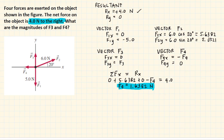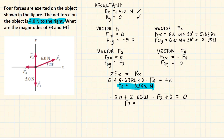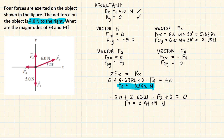Using the same approach for the summation of forces in the y-direction: F1y is negative 5.0, F2y is positive 2.0521, F3y is positive F3, and F4y is 0. Setting the sum equal to the y-component of the resultant, which is 0, and solving for F3: F3 equals 5.0 minus 2.0521, which equals 2.9479 newtons.